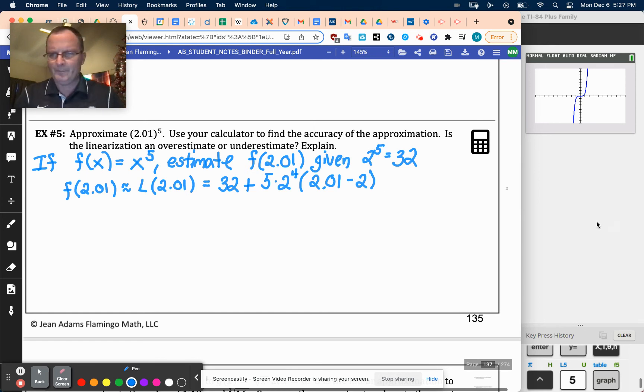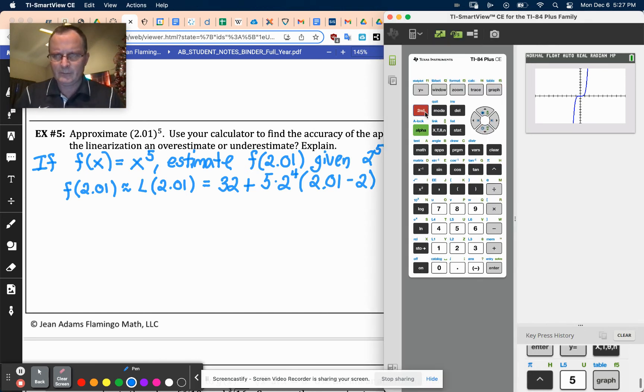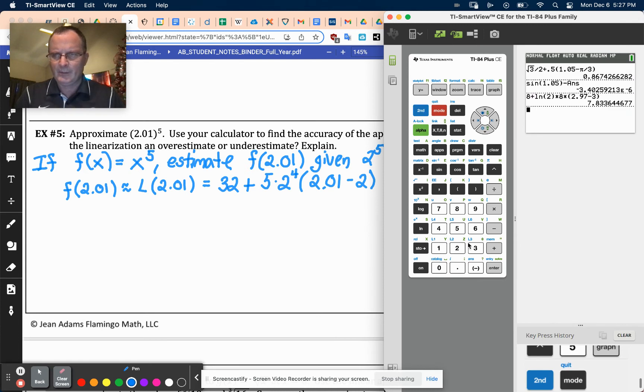It says we could use a calculator, so I will. We'll have 32, 2 to the 5th, plus 5 times 2 to the 4th, and then multiply it by 0.01. 32.8. So this is going to be 32.8.